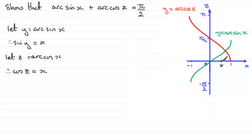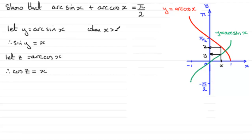Now, when x is positive, you're going to find that you could get two values — this one here on y equals arc sine x, and this one up here on y equals arc cos x. Let's suppose that this one on y equals arc sine x is y, and this value is then the z value. So, when x is greater than 0, I'd now want to look at a quadrant diagram — both y and z are in the first quadrant.